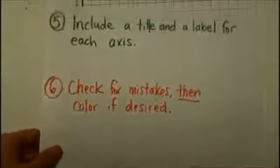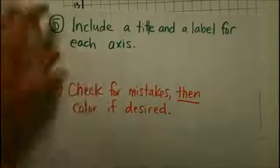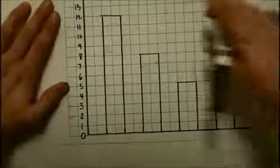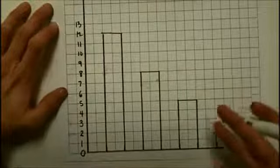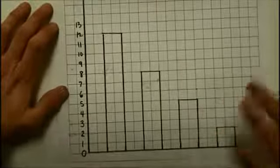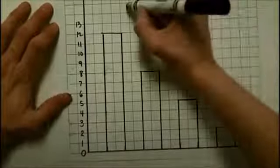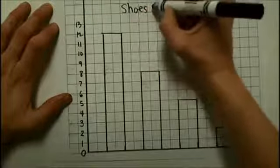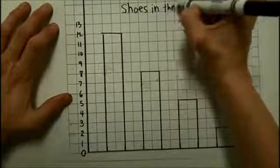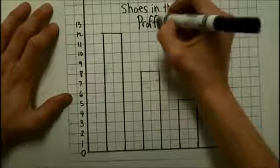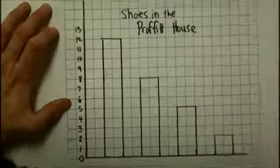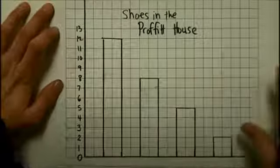Now, I'm ready to include a title and label for each axis. So, I need a title for the bar graph, and then a label for both sides. A title needs to be something that lets the reader of this graph know immediately what kind of data is being displayed. So, I'm going to name my bar graph, Shoes in the Profit House. And this makes it really obvious when we're looking at this bar graph that this is what you're looking at.